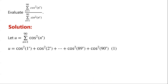How to evaluate this expression without using a calculator? We can easily work out cosine for some specific angles without a calculator — for example, cosine of 0 degrees equals 1, cosine of 30 degrees equals root 3 over 2, cosine of 45 degrees equals root 2 over 2, and cosine of 90 degrees equals 0. However, it is not easy to work out cosine for each angle from 1 degree to 89 degrees. We will use the cofunction identity and Pythagorean identity to evaluate the sum of cosine squared.